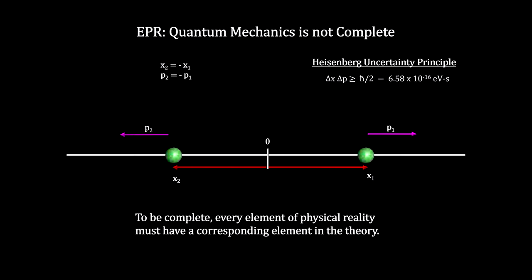But according to Einstein, measuring x2 allows us to predict x1, and measuring p1 allows us to predict p2. With this we can know both the position and momentum of both particles at the same time.